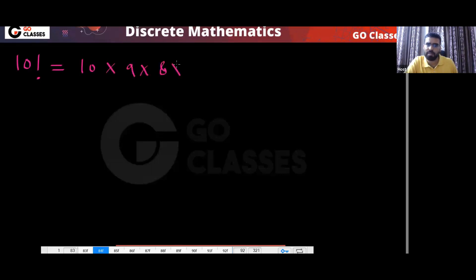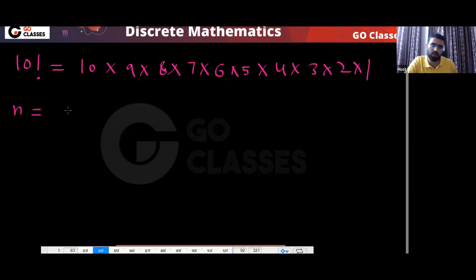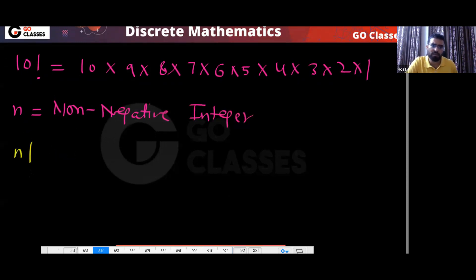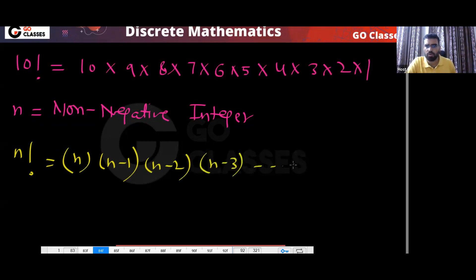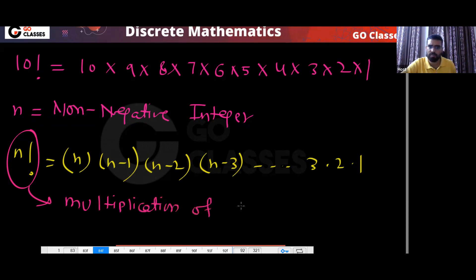This is the definition of factorial. If I ask you what is 10 factorial, that will be 10 multiplied by 9 multiplied by 8 multiplied by 7, and so on: 6 multiplied by 5 multiplied by 4, 3, 2, 1. So if n is a non-negative integer, n factorial will be n multiplied by (n−1) multiplied by (n−2) multiplied by (n−3) and so on down to 1. n factorial basically means from one to n you multiply all the integers.